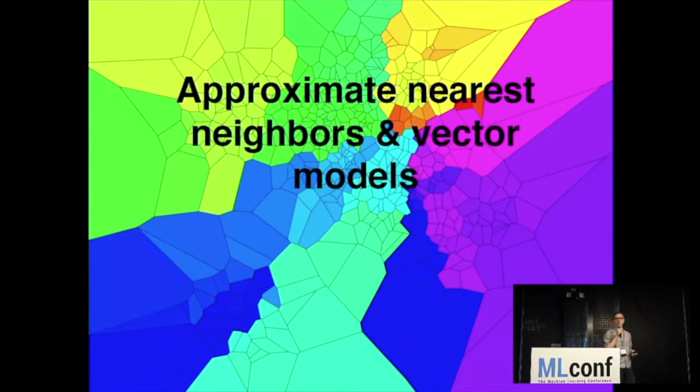So I'm going to talk about nearest neighbors and vector models. Some of it is actually strictly not machine learning, but it turns out to be pretty useful because vector models are getting more and more popular.